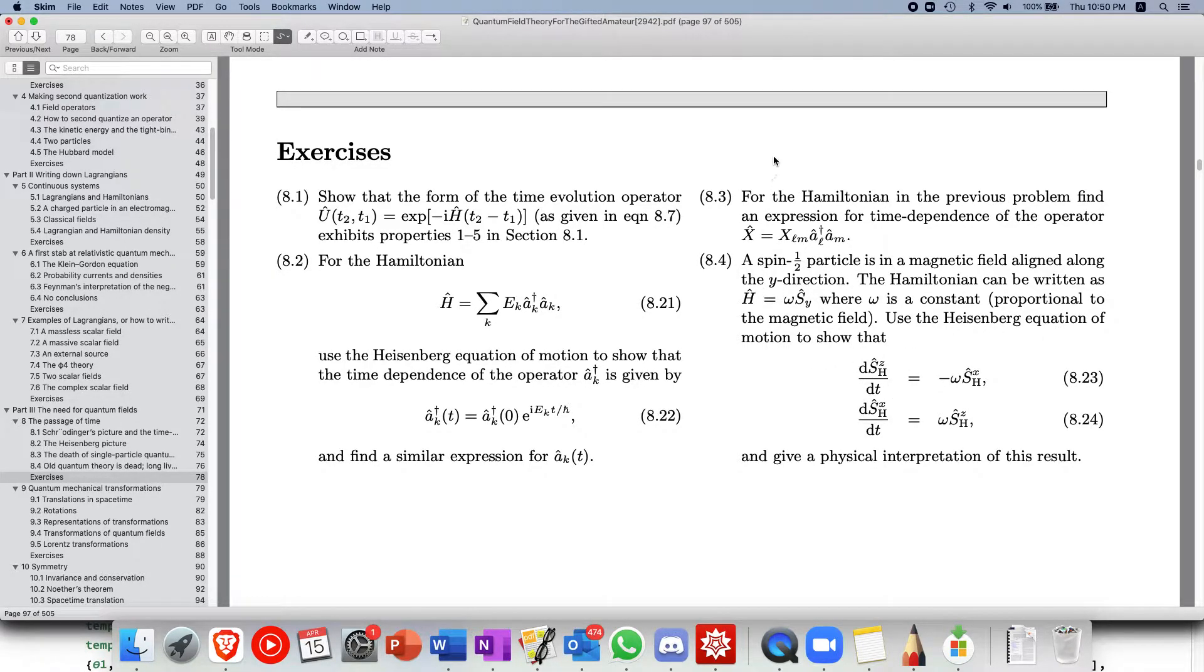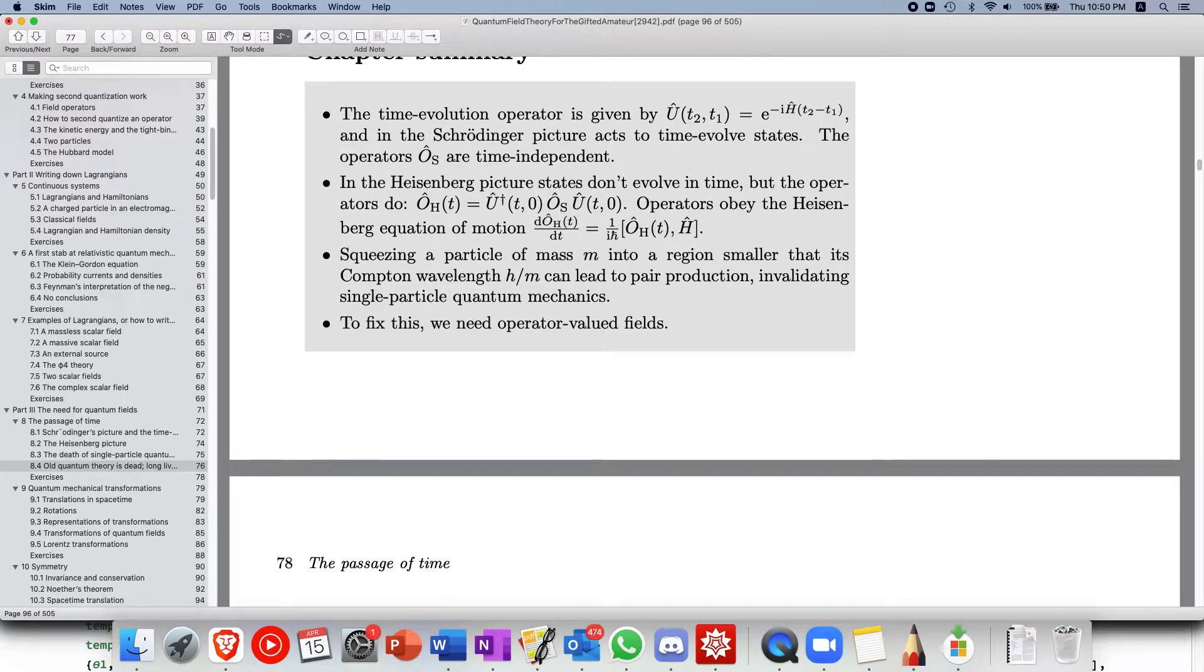So first of all, what is the Heisenberg equation of motion? The Heisenberg picture states that the quantum states psi do not evolve in time so they are fixed. However, the operators that act upon it in the Heisenberg picture, they change with respect to time.